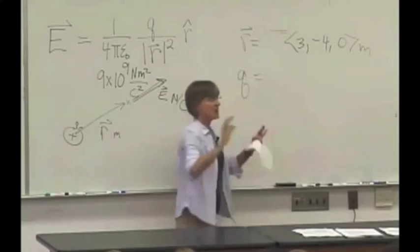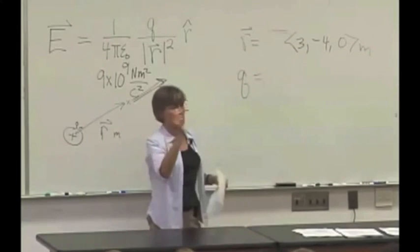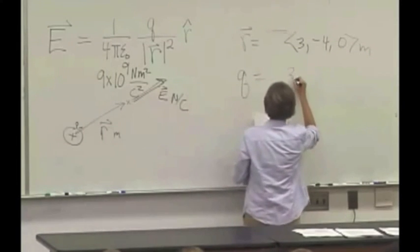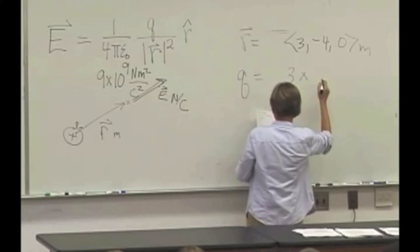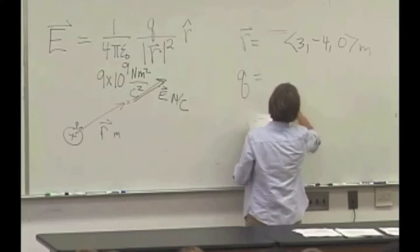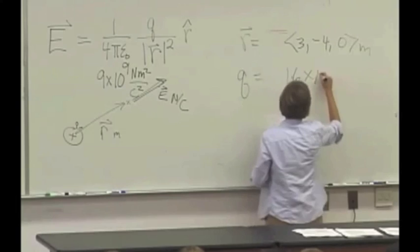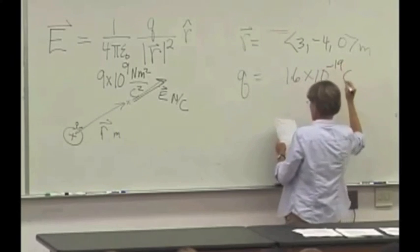Say we have an object that's some kind of macroscopic object, a little charged ping-pong ball or something with 3 times... Oh, let's make it a proton. Let's make it 1.6 times 10 to the minus 19 Coulombs.